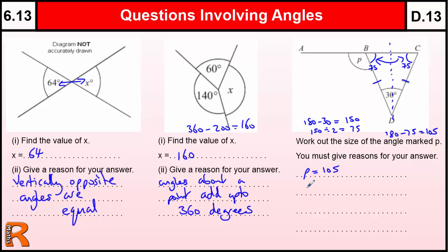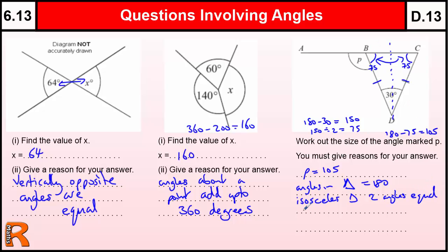Why is that? We used: angles in a triangle equal 180; isosceles triangle, two angles equal; and then angles on a straight line equal 180. So I've just written out the three rules we used in that question — angles in a triangle, that's 180, and two angles equal in an isosceles triangle.